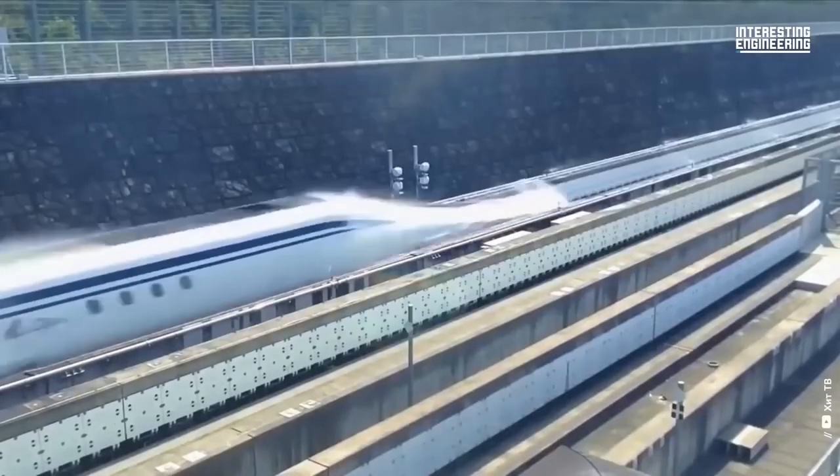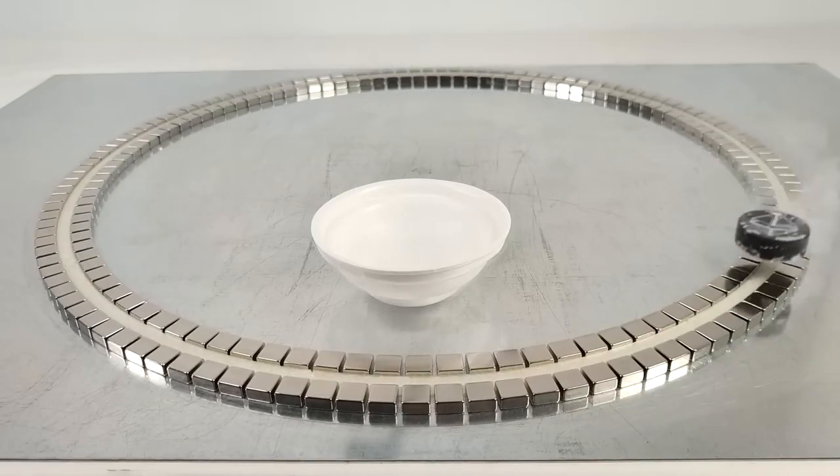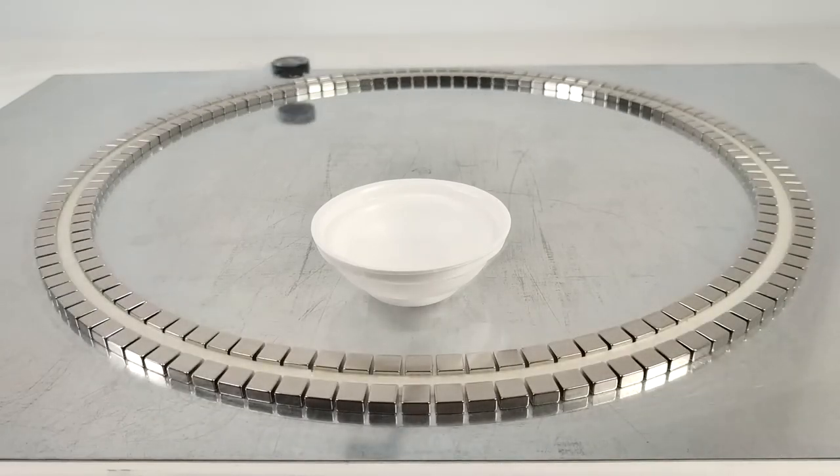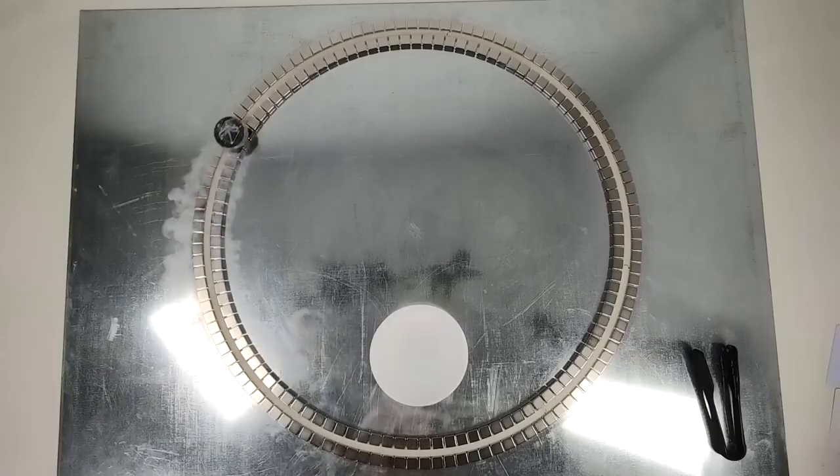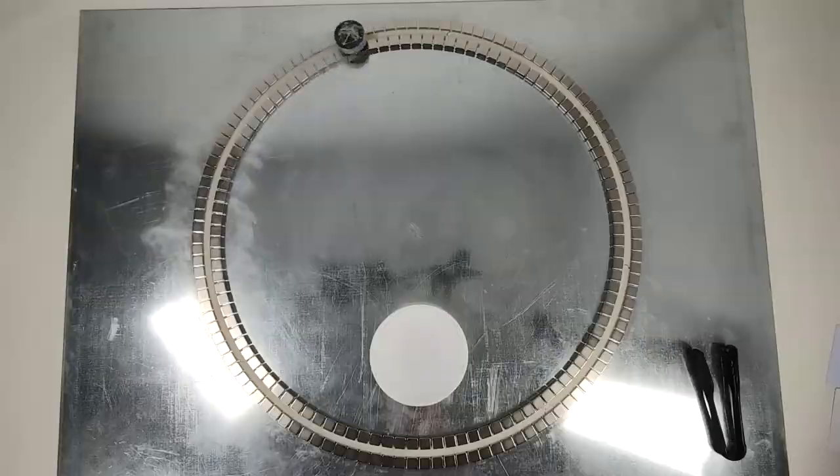And of course, maglev trains, how can we forget them? Thanks to the Meissner effect, which we'll discuss in more detail in a separate video if you're interested, a superconductor can levitate in the presence of a permanent magnet, or conversely, a permanent magnet can levitate above a superconductor.